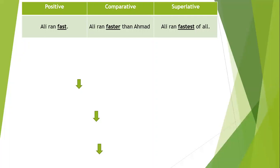For the comparative degree: 'Ali ran faster than Ahmad.' Here we are comparing the running abilities of two boys — Ali and Ahmad. When talking about two persons, you use the comparative degree. The superlative degree uses 'fastest.' So: fast is the positive degree, faster is the comparative degree, and fastest is the superlative degree of the adverb.